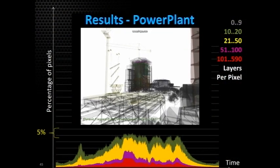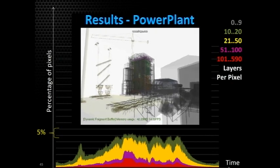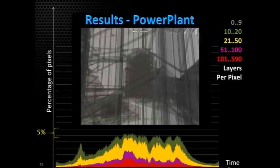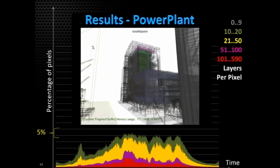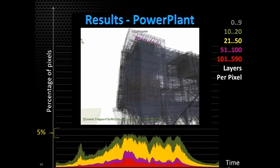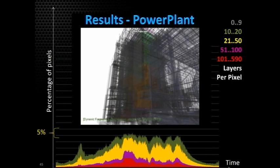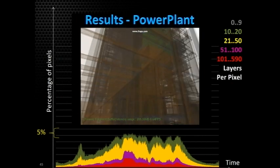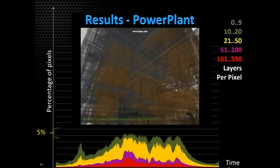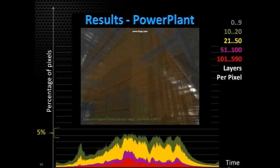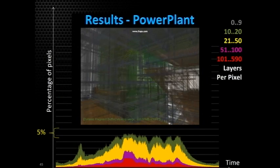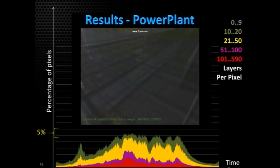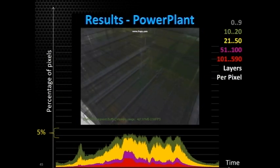This is the power plant rendered with our technique. Here you can see the memory consumption — it is dynamic and increases when more transparent fragments need to be rendered. This plot represents the number of pixels by the amount of transparent layers. The red area represents the sum of pixels which have more than 100 transparent layers, while the remaining area represents pixels with less than 9 transparent layers, which compared to the 100+ category are insignificant.